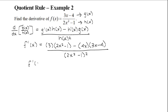I'm just going to simplify the top so it looks nicer. This simplifies to (6x² - 3 - 12x² + 16x) all over (2x² - 1)².